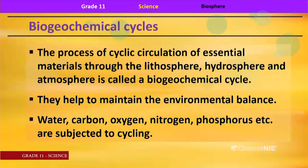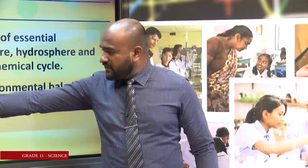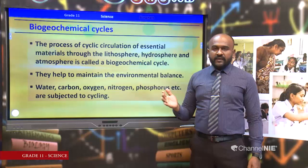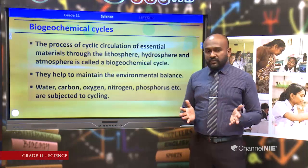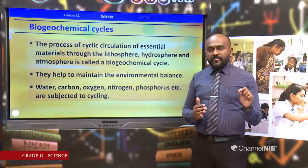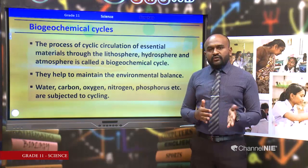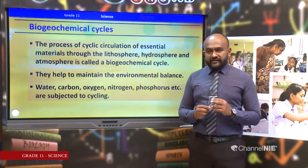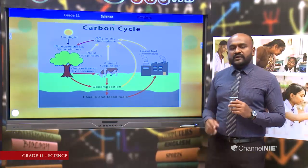Water, carbon, oxygen, nitrogen, and phosphorus are all subjected to cycling — not only these ones, but all elements used by organisms are subject to this cycling. We are going to talk about the cyclic circulation of two essential elements as examples: carbon and nitrogen. So we talk about the carbon cycle and the nitrogen cycle, and first we talk about the carbon cycle.